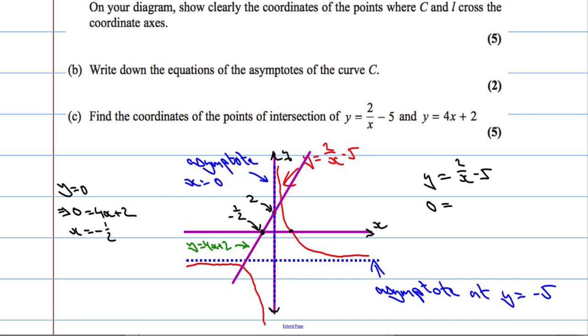When we cross the x-axis, that means y equals 0. So you get 0 equals 2 over x minus 5. I'm going to add 5 to both sides. So you get 5 equals 2 over x. Manipulating the equation, multiply both sides by x and then divide by 5. We're going to get x equals 2 over 5. So this point here is 2 over 5.